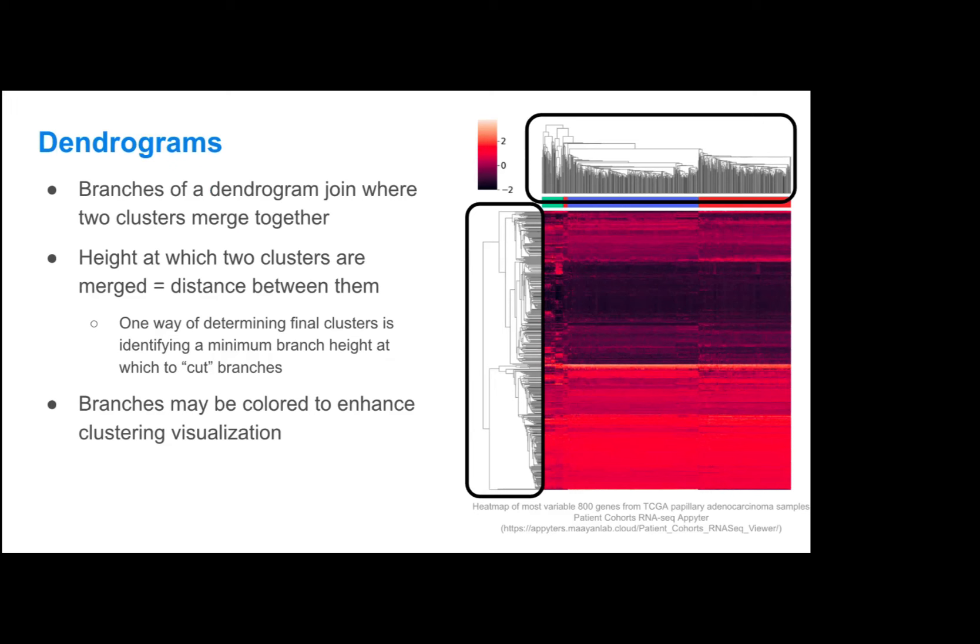These dendrograms actually show each of the clusters that are computed using hierarchical clustering. The branches of a dendrogram will join wherever two clusters merge together, and the height at which the two clusters are merged actually represents the distance between those two clusters. One common way of determining the final clusters is to identify a minimum branch height at which you will cut the branches and consider those your clusters. In a lot of traditional dendrograms, the branches will actually be colored to enhance the visualization of the clusters, so different branches will be one color if they all correspond to one of the final clusters.